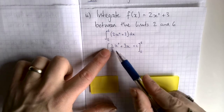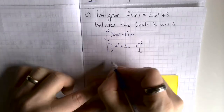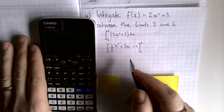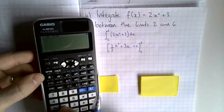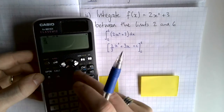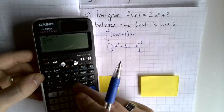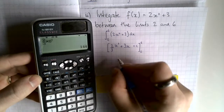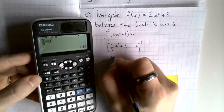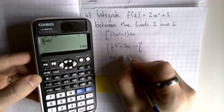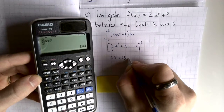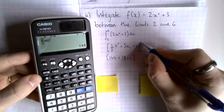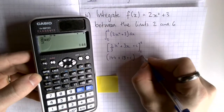Substituting x equals 6: 6 cubed is 216, so 2/3 of 216 is 144. Plus 3 lots of 6 is 18, plus c. That's the result with 6 substituted in. Now substituting x equals 2: 2 cubed is 8, so 2/3 times 8 is 16/3, plus 3 lots of 2 which is 6, plus c.